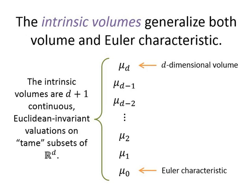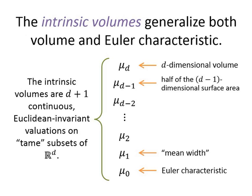In general, mu_k gives a k-dimensional notion of the size of a set. Mu_d is simply the d-dimensional volume; mu_0 is always the Euler characteristic. Mu_{d-1} is half the surface area — the factor of one-half reflects that intrinsic volumes are intrinsic to the set and don't depend on the ambient embedding space. Mu_1 is related to the mean width. The classical Hadwiger theorem says any Euclidean invariant valuation continuous on compact convex sets is a linear combination of the intrinsic volumes, so understanding them means understanding all suitable notions of size.